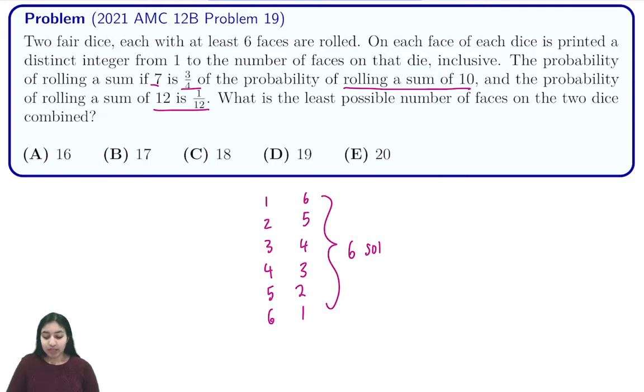And because of that we know that six is going to be equal to three-fourths times the number of ways to roll a ten. So we know that the number of ways to roll a ten is six times four-thirds, which is eight.